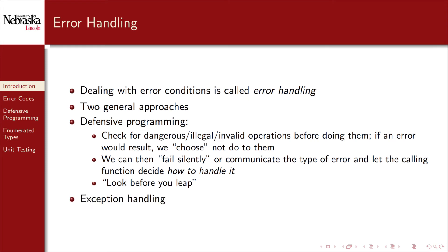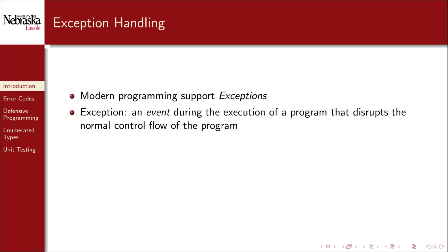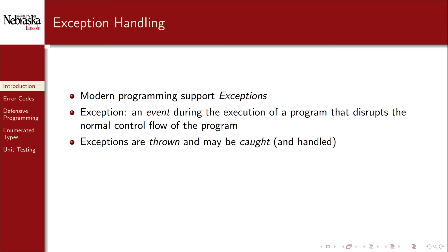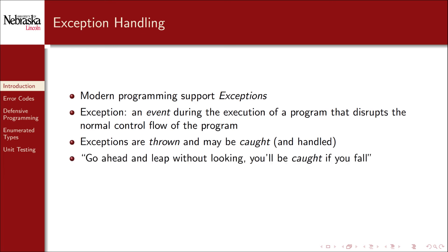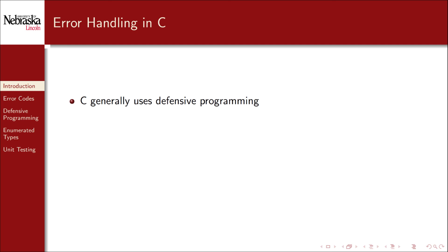The second approach is exception handling. Most modern programming languages support exceptions. An exception is an event that may occur during the execution of a program that disrupts the normal flow of control. Usually we say that exceptions are thrown and may be caught and handled — in fact, the keywords throw and catch are often used. In contrast to look before you leap, exception handling says go ahead and leap without looking; we'll catch you if you fall. There are many advantages to exception handling, but the C language does not directly support it. C does support signals and error handlers, which are close to the concept of exceptions but not exactly the same thing.